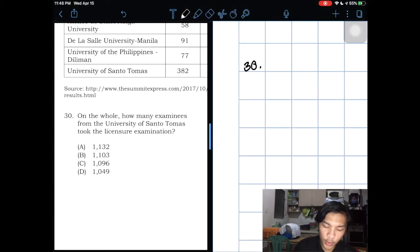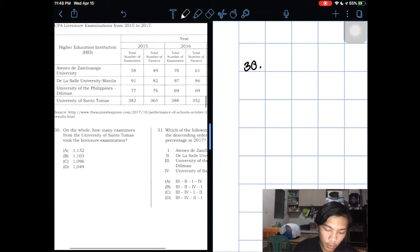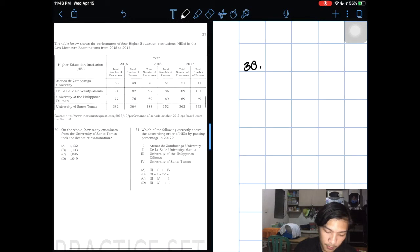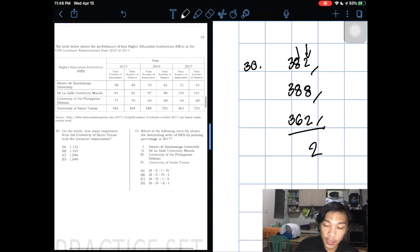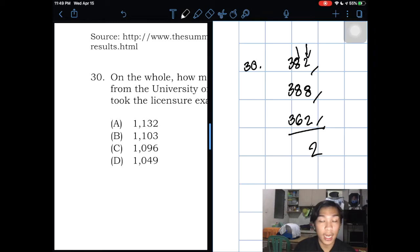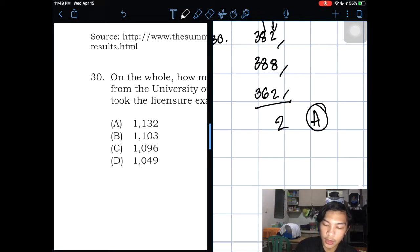Number 30. On the whole, how many examinees from University of Santo Tomas took the licensure exam? So the number who took the exam is 382, 388, and then 362. Based on the ones digit, we can get the answer, which is 2, 8, and 2. So the answer here is 12. Even without adding it, there's only one choice with 2, which is letter A. So A is the answer for 30.